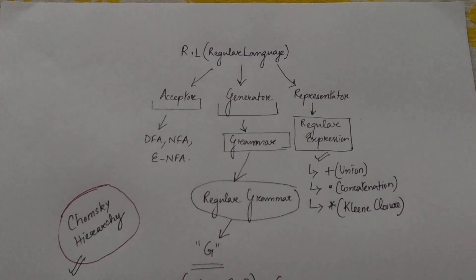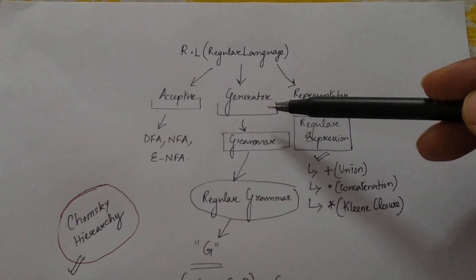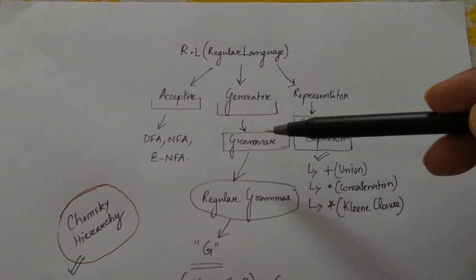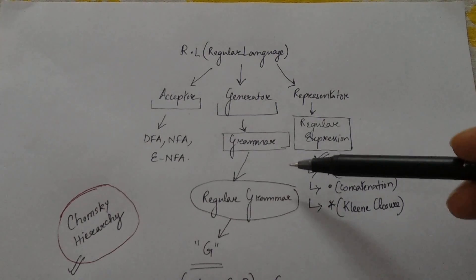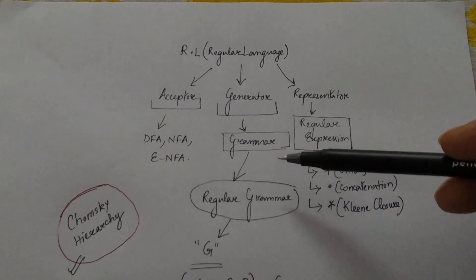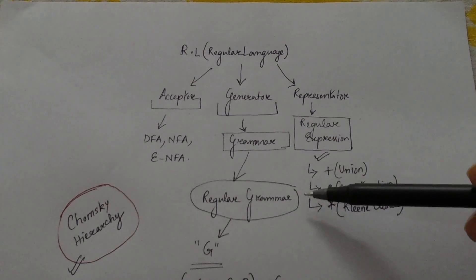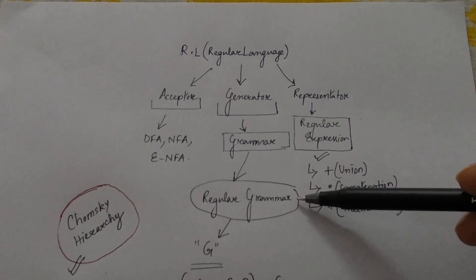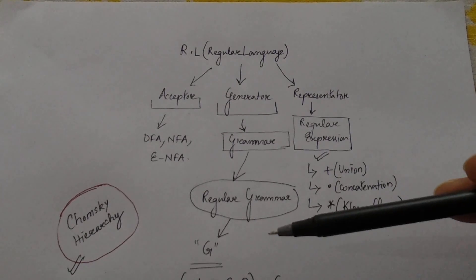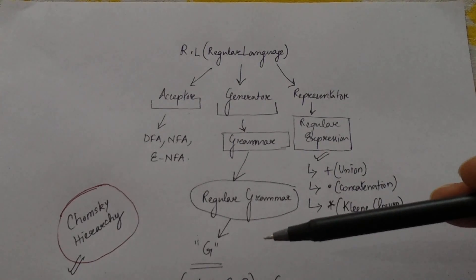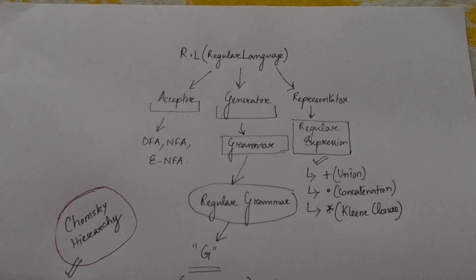In this unit, we will be focusing on the generator, which is the set of rules defined by the term grammar. Since the language is a regular language, the grammar will also be a regular grammar, represented by capital letter G.